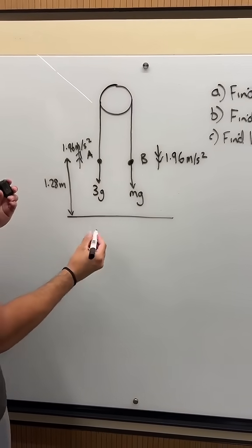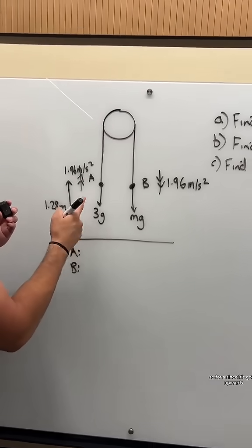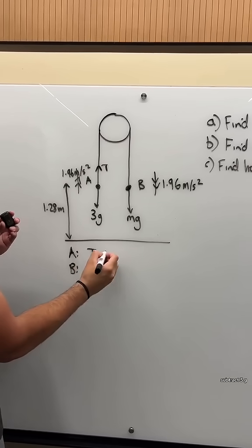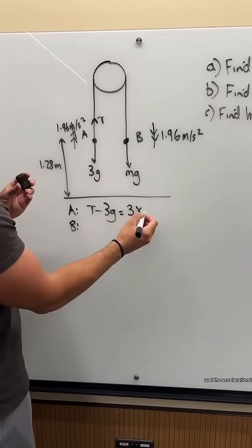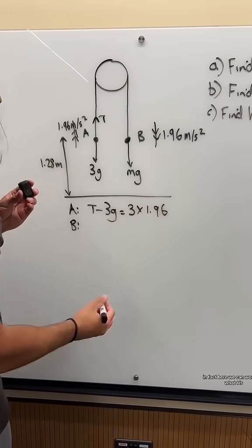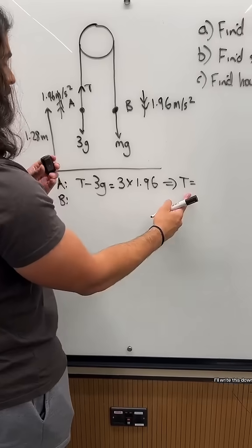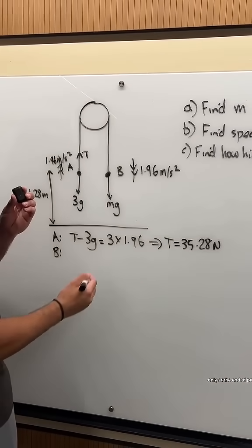Question 1, find M. So we're going to look at the equations of motion for both A and B. For A, since it's going upwards, the positive force is T subtract 3G. So F equals MA, the net force is the mass 3, and the acceleration is 1.96. In fact, here we can work out what T is. I'll write this down. You get T is 35.28. We don't need to round just yet, only at the end of part A.